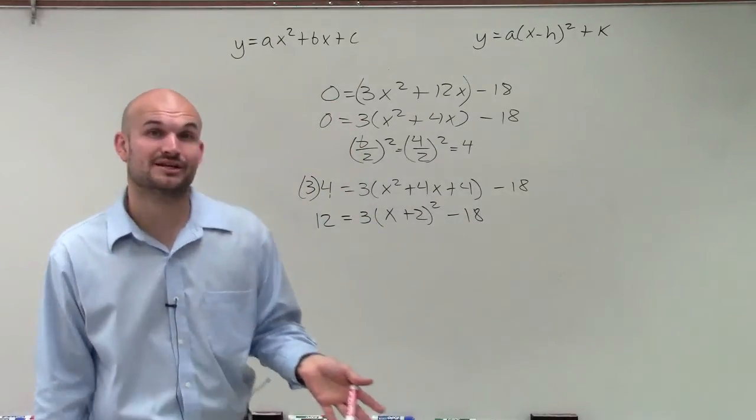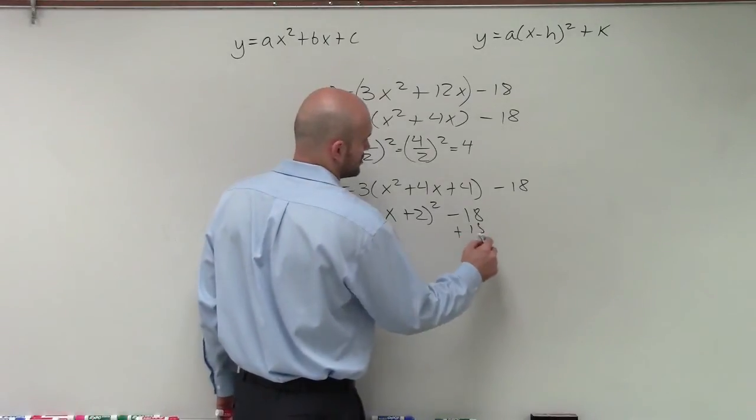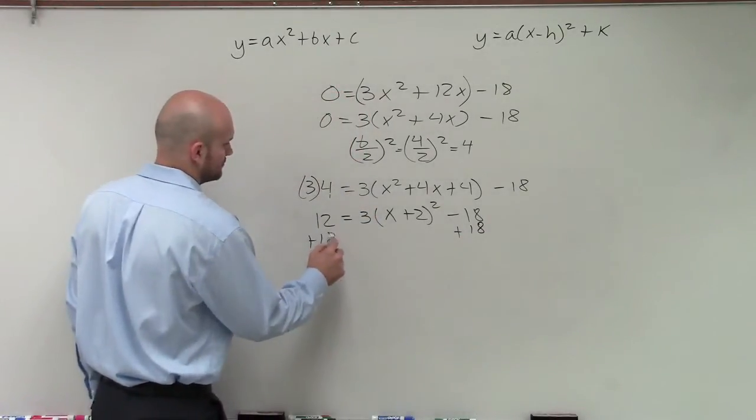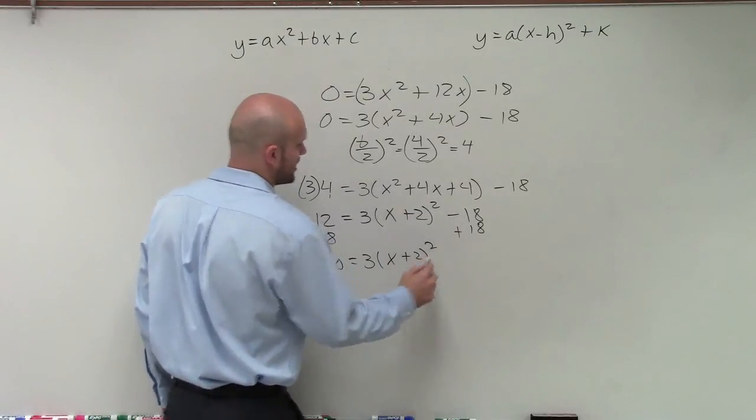Now, all I simply need to do is just apply my inverse operations. So I'll add 18. So therefore, I get 30 equals 3 times x plus 2 squared.